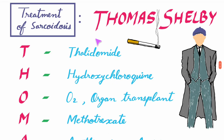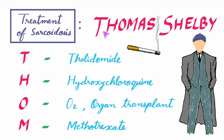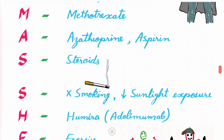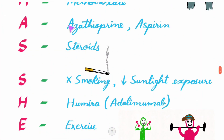Treatment of sarcoidosis — here is the mnemonic 'THOMAS SHELBY': T for thalidomide, H for hydroxychloroquine, O for O2 or organ transplant, M for methotrexate, A for azithromycin or aspirin, S for steroids.